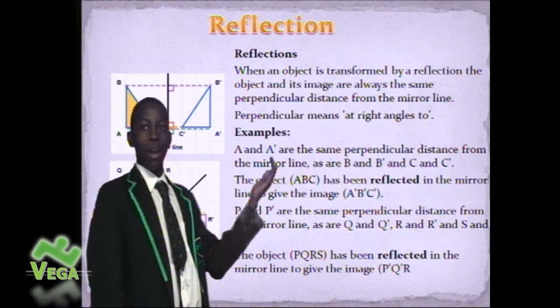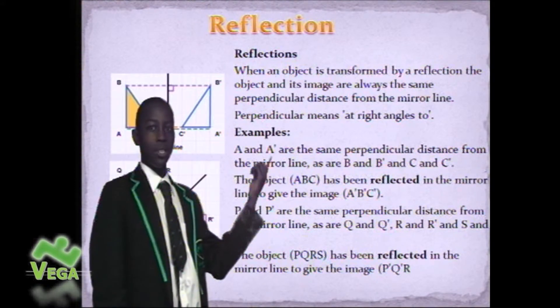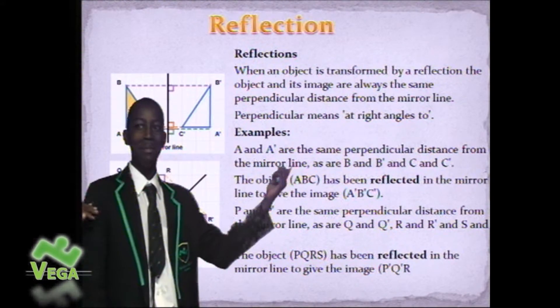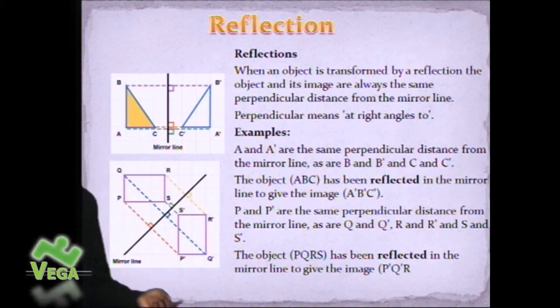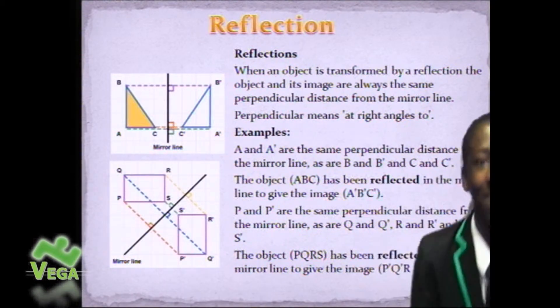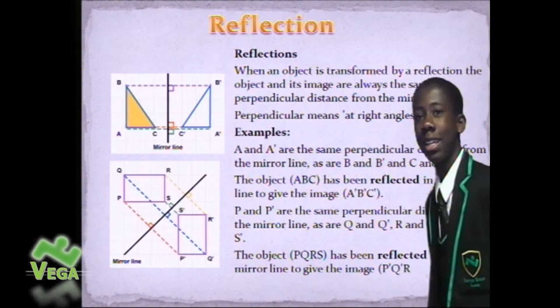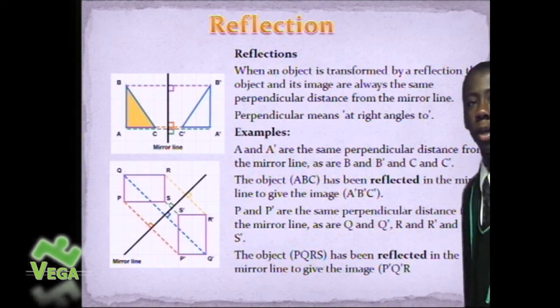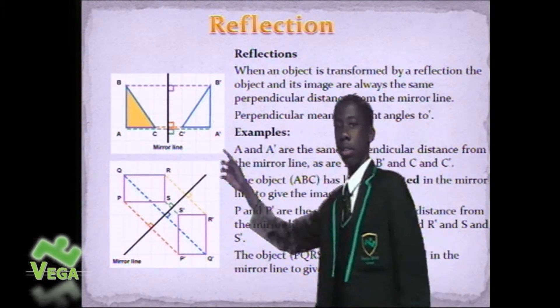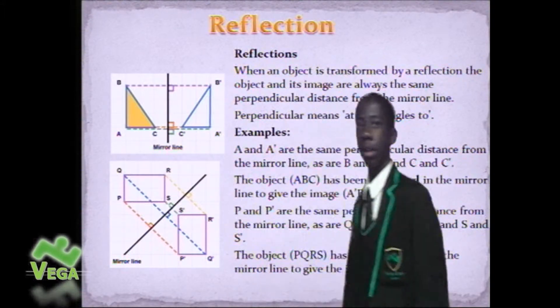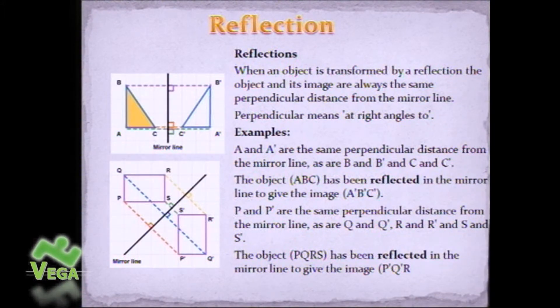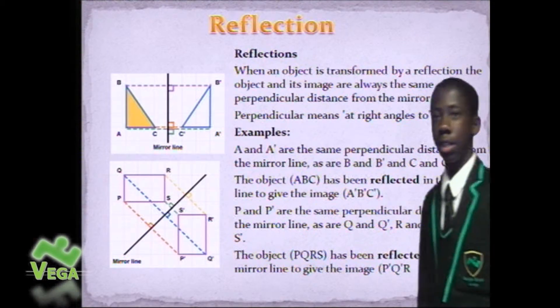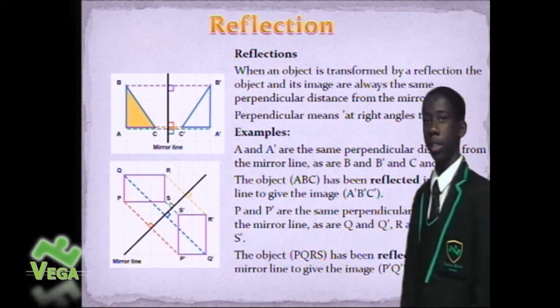The example of this: A and A are the same perpendicular distance from the mirror line, as are B and B, and C and C. The object ABC has been reflected in the mirror line to give the image ABC.